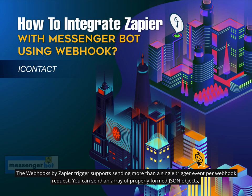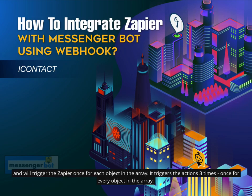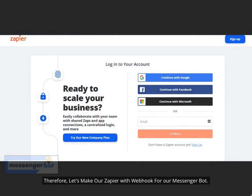The Webhooks by Zapier trigger supports sending more than a single trigger event per webhook request. You can send an array of properly formed JSON objects, and it will trigger Zapier once for each object in the array — triggering the actions once for every object. Let's make our Zapier with webhook for our Messenger Bot.